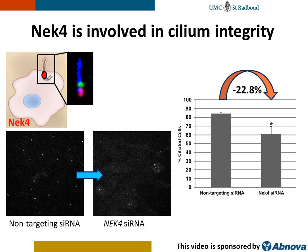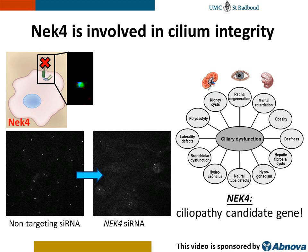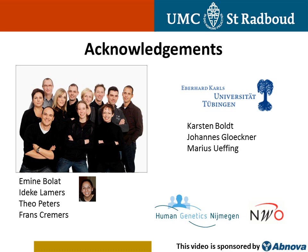Now we firmly established NEC4 as a ciliary protein, we wanted to gain more insight in its actual function in the cilium. We therefore performed siRNA knockdown experiments in ciliated cells to assess the effects of NEC4 deficiency on cilium assembly. Upon down-regulation of NEC4, we observed a significant decrease in cilium assembly, suggesting a role for NEC4 in cilium integrity. Together, our data define NEC4 as a candidate gene for ciliopathies, especially those involving eye, brain and kidney phenotypes.